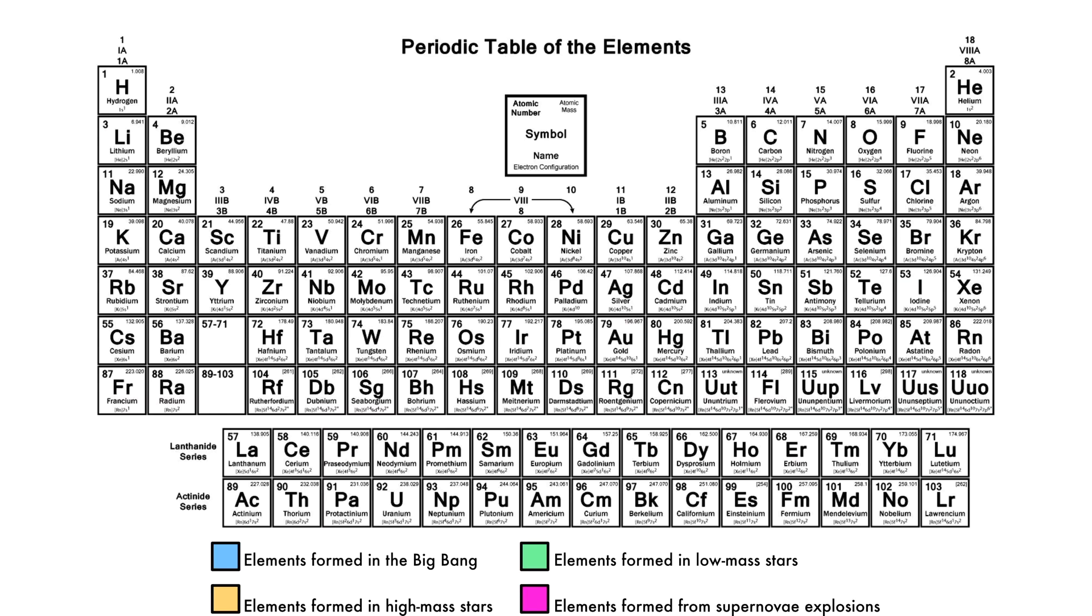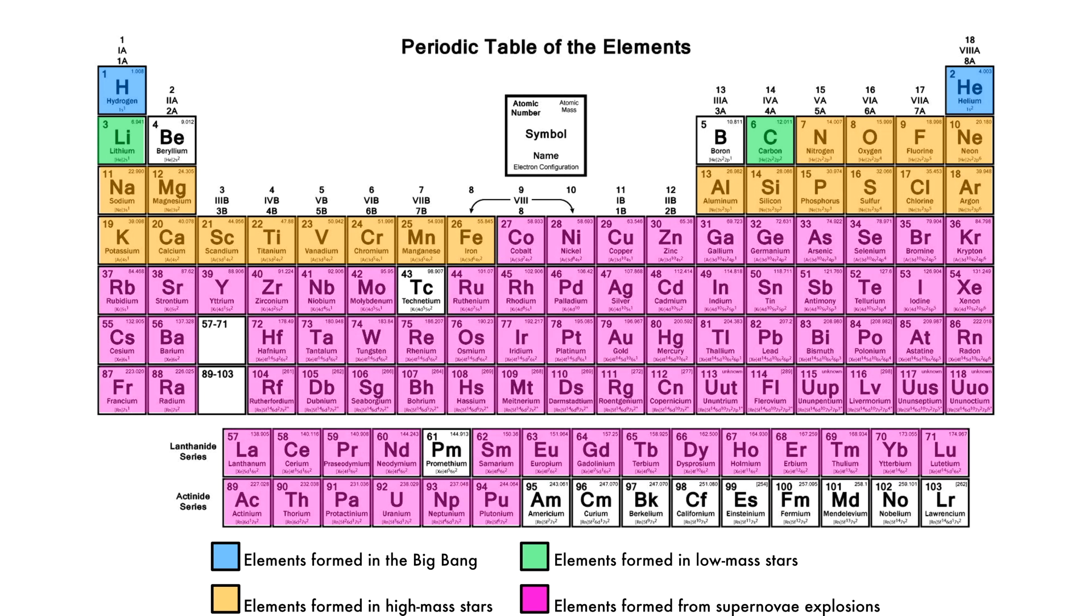As we conclude our discussion on the life cycle of stars, it is important to realize that without stars, the universe would not have the abundance of different elements that we have today. Were it not for stars, the only building blocks we'd have to create matter would be hydrogen and helium, leftovers from the Big Bang. This periodic table demonstrates how stars produce all of the complex atoms in the universe. The elements in blue were produced from the Big Bang. In green are elements produced through fusion in low-mass stars. The elements in yellow are produced through fusion in high-mass stars. And finally, all of the elements in purple are produced either in supernova explosions, or as the result of the collision of neutron stars.